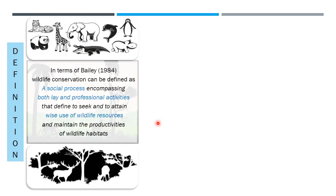Let us look into one of the definitions of wildlife conservation. I'll take up the definition given by Billy. He says that wildlife conservation is a social process encompassing both lay and professional activities that define, seek, and attain wise use of wildlife resources and maintain the productivities of wildlife habitats. This is one of the best definitions I have come across which describes the process of wildlife conservation in ultimate detail.